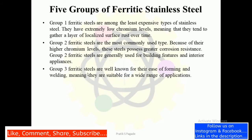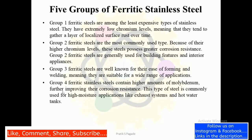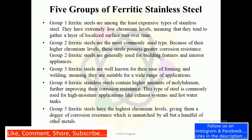Group 3 ferritic steels are well known for their ease of forming and welding, meaning they are suitable for a wide range of applications. Group 4 ferritic stainless steels contain higher amounts of molybdenum, further improving their corrosion resistance. This type of steel is commonly used for high-moisture applications like exhaust systems and hot water tanks. Group 5 ferritic steels have the highest chromium levels, giving them a degree of corrosion resistance which is unmatched by all but a handful of other metals.